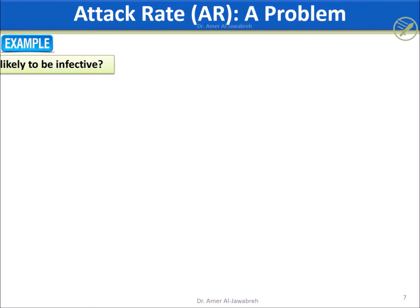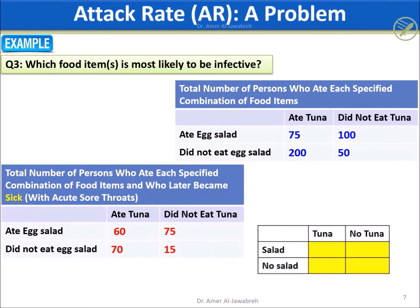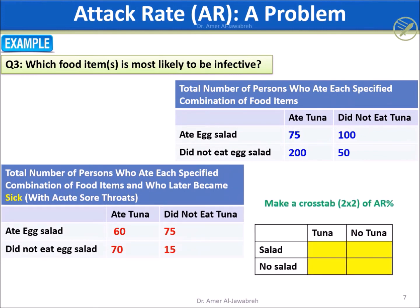To answer the sore throat infection question, we need to create a 2-by-2 cross-tab — a table of AR for the two foods. The values are: 16 over 75, 75 over 100, 70 over 200, and 15 over 50.